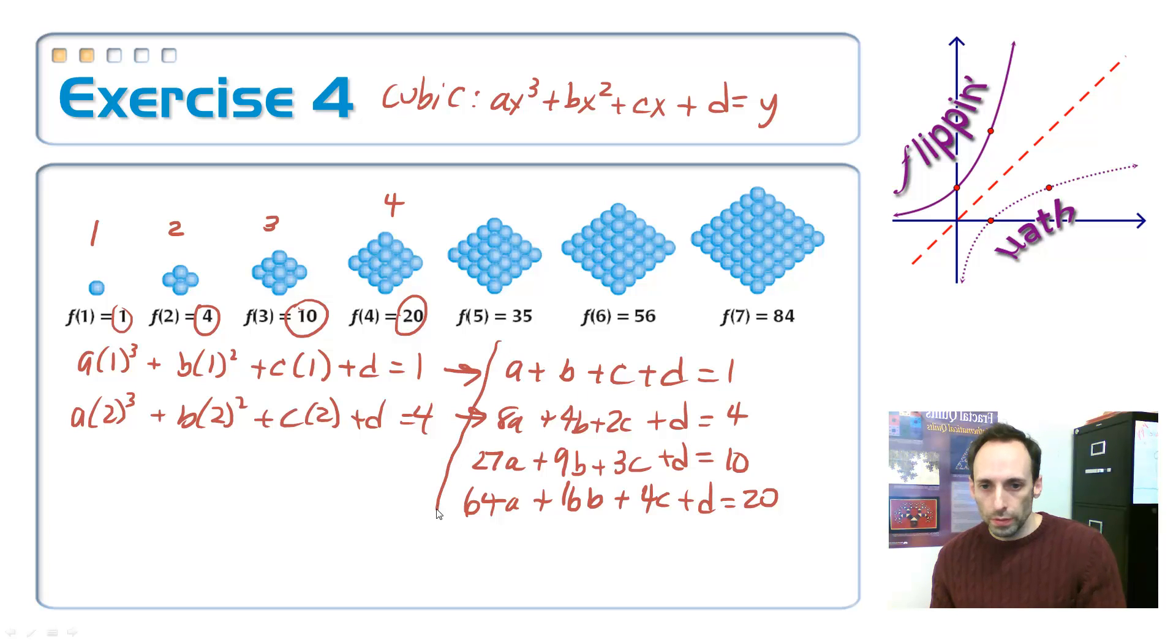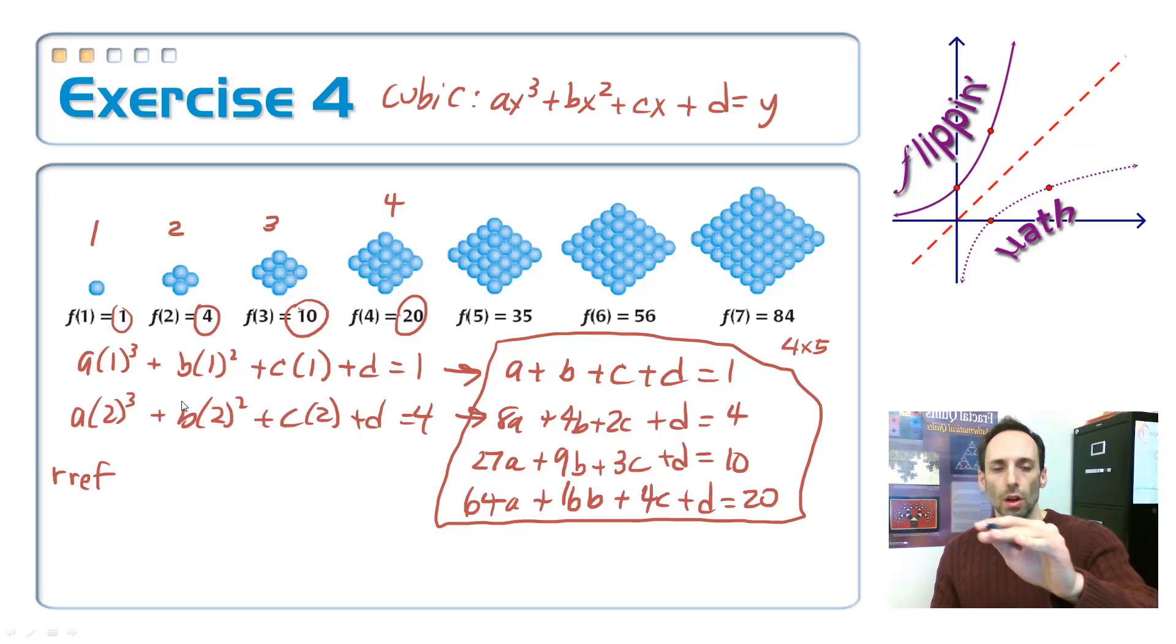We're going to type all of this into the calculator as a matrix. What size matrix is that? How many rows do we need? 1, 2, 3, 4 rows, and there are 1, 2, 3, 4, 5. It's a 4 by 5 matrix. We're going to type that into the matrix menu. And then the math operation that it's going to do, remember is RREF, row reduce echelon form. And that'll put it all the way down to the final answer. So I'm going to pause, let you guys enter that into the calculator.